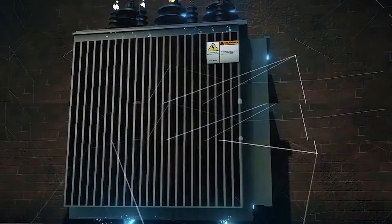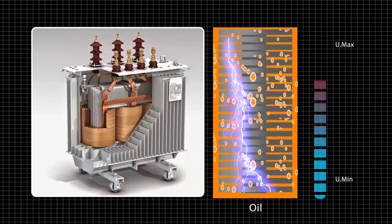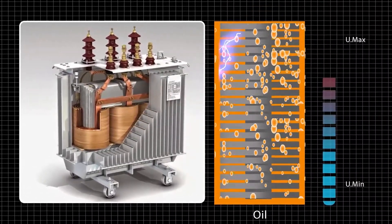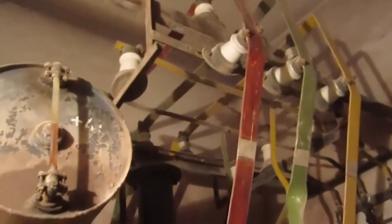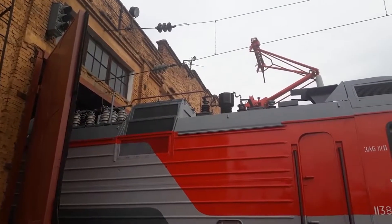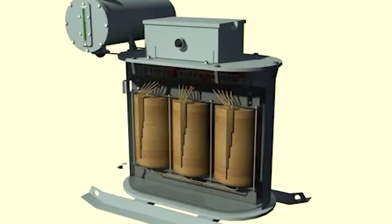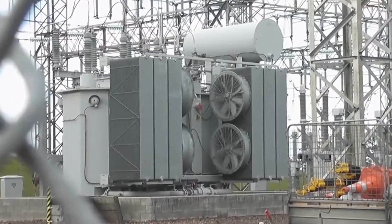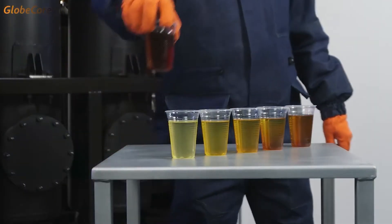If we draw an analogy with transformers, then insulating oil is a transformer's blood, which can be sampled to determine the condition of the system. This is especially relevant for transformers that have been in operation for more than 20 years, as well as special transformers operating under heavy loads — traction, mining, ship, electrical furnace, and others. In order for diagnostics to be effective, it must be continuous and include identification of all peaks and minimums of important parameters, to identify sharp deterioration in the condition of the oil.